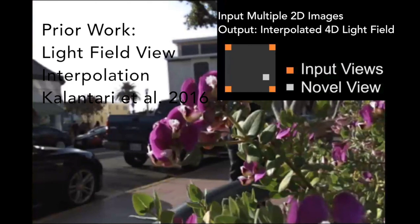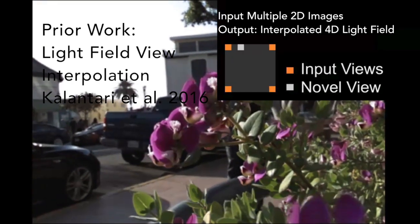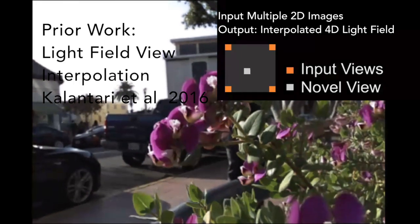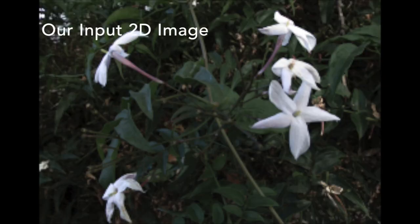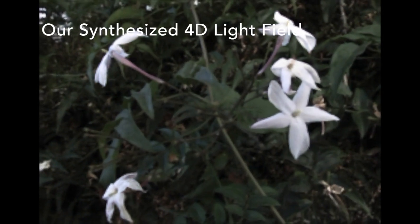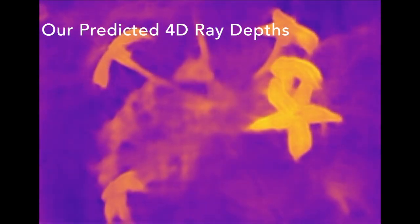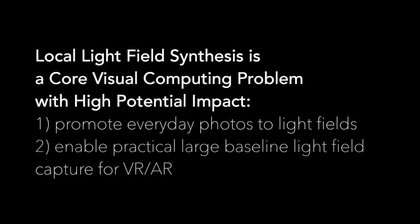Previous work on light field interpolation uses multiple 2D images to synthesize a dense 4D light field by interpolating between the input views. We instead focus on the general problem of using a single 2D image to simultaneously synthesize all views in a dense 4D planoptic camera light field, along with depths for each ray in the light field. We call this problem local light field synthesis.